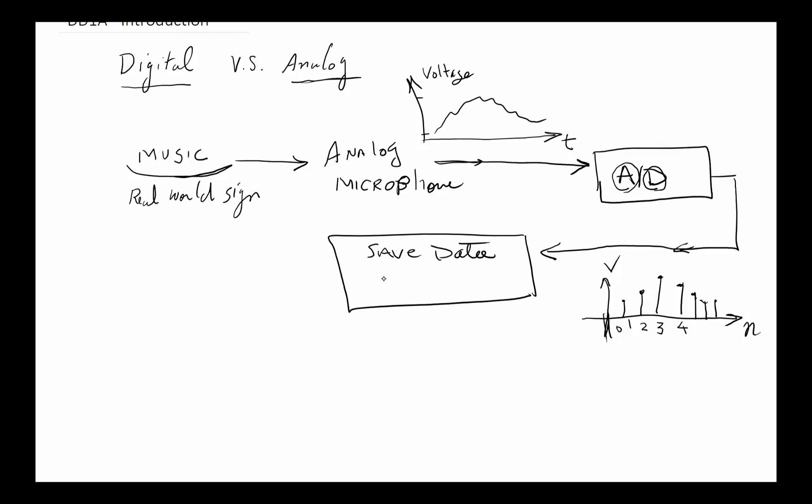So that process is called A2D conversion. Now at this point we are able to save the data, we can process the data, do all of those things to it. And the beauty of this is that all you have to remember is numbers: what is the value at 1, what's the value at 2, 3, 4, 5, 6, and then I've got the signal.